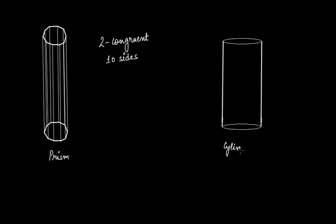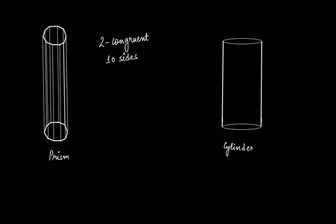This is a cylinder having a round lateral surface. As we go on increasing the number of sides — taking polygons with more and more sides — this shape of prism will come closer and closer to a cylinder. Comparing this figure with a prism having four sides versus a prism with 10 sides, more and more sides will make it further round, closer and closer to a cylindrical shape. That is the similarity between a cylinder and a prism.